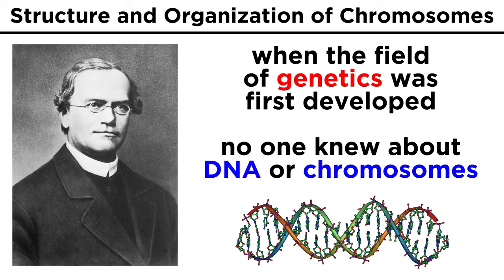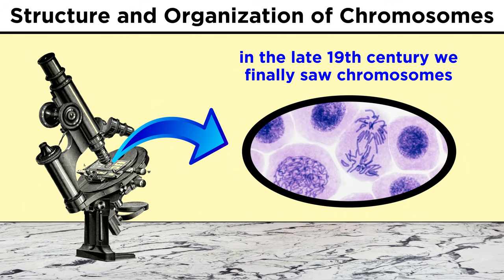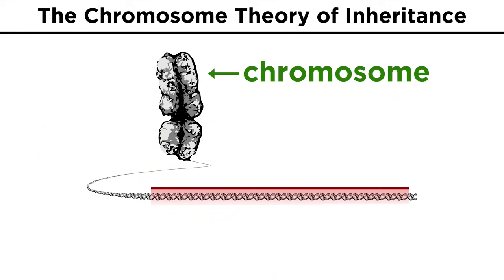When Mendel spoke of genes, it was an abstract concept, as no one knew about DNA at that time. But later in the century, when microscopes became powerful enough to see chromosomes and watch mitosis take place, scientists began to see that Mendel had been exactly right, and they developed the chromosome theory of inheritance.